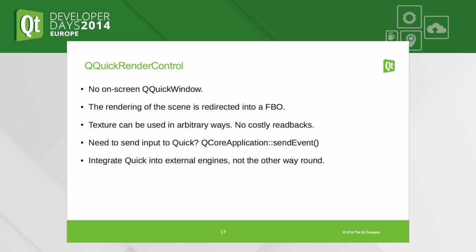The point here is that there's no separate QQuickWindow on the screen — instead it got redirected. We get a texture and use it in our OpenGL renderer. That could potentially be a non-Qt-based OpenGL renderer — it doesn't matter, because you just have an ordinary GL texture, and it's all hardware accelerated. There's no reading back pixels with glReadPixels — this is the real thing. It was possible to achieve something similar using tricks with shader effects and FBOs, but there was no proper public way to do this.